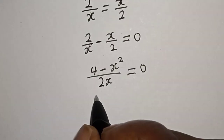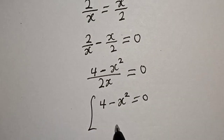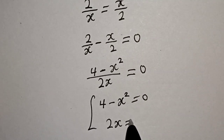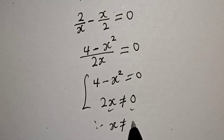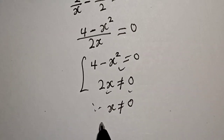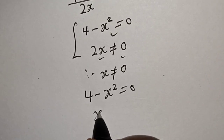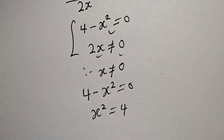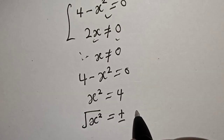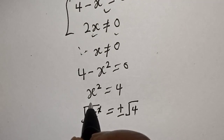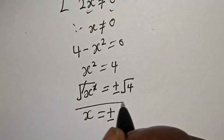From the numerator we consider: 4 minus x squared is equal to 0. From the denominator, 2x cannot equal 0, so x is not equal to 0. Now, from 4 minus x squared equals 0, we get x squared equals 4. Taking the square root of both sides: x is equal to plus or minus 2. That is our final answer for the first method.